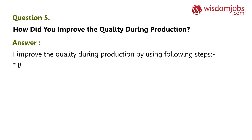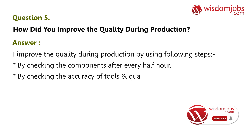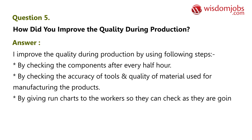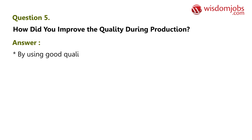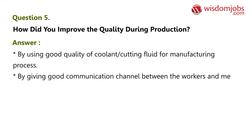Question 5: How did you improve the quality during production? We improve quality during production by checking the components after every half hour, by checking the accuracy of tools and quality of material used for manufacturing the products, by giving run charts to workers so they can check whether they are within tolerance — run charts provide continuous production with quality — by using good quality coolant and cutting fluid for the manufacturing process, and by maintaining good communication channels between the workers and management.